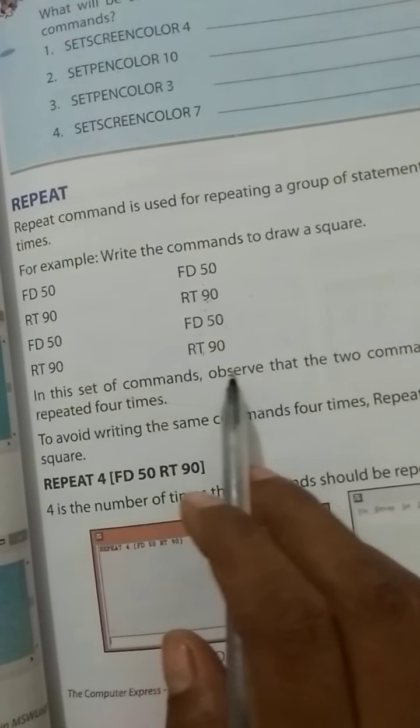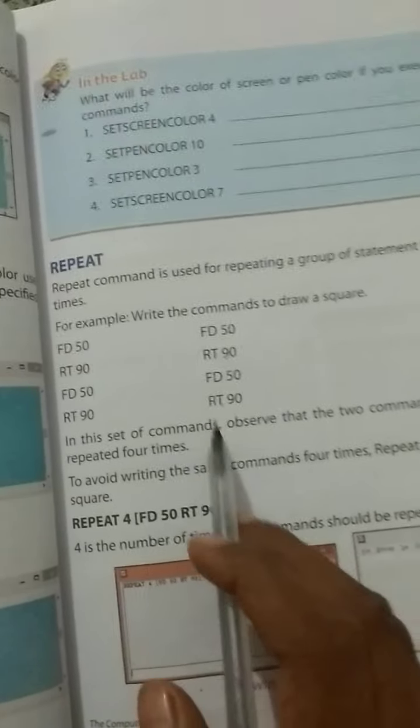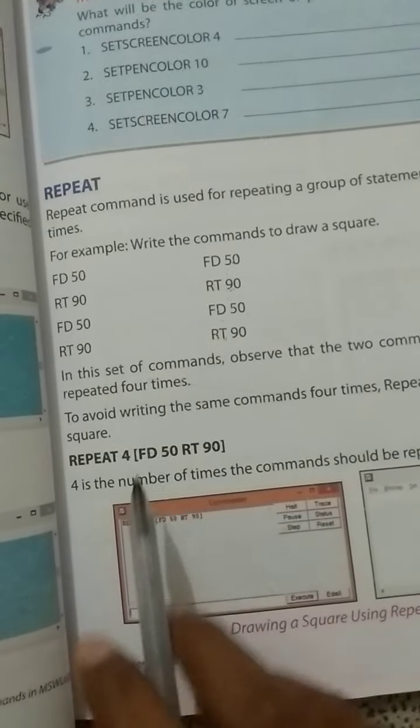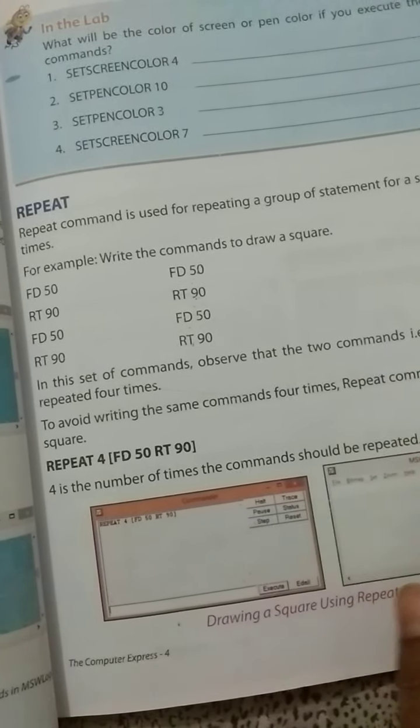In this set of commands, observe that the two commands FD 50 and RT 90 are repeated four times. As you can see, two times here and two times there. To avoid writing the same commands four times, repeat command is used to draw the square.